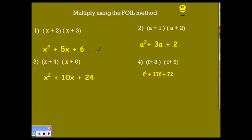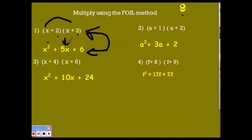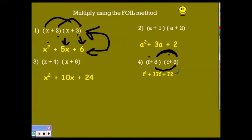If we look at the answer, we know that x times x is x squared. I also notice that 2 plus 3 equals 5, so 2x plus 3x is 5x. And 2 times 3 is 6. Same thing here: f times f is f squared. The 8 and 9 add up to 17, giving us 17f in the middle, and 8 times 9 is 72.